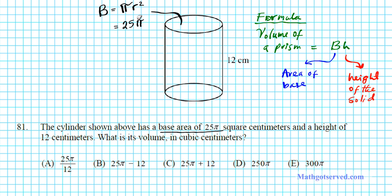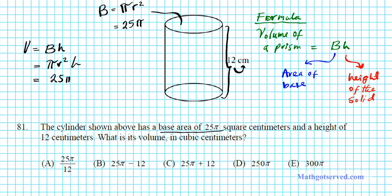So we know what big B is. The only thing we need to find is H. H is the height of the solid and we can clearly see that it's 12 centimeters. So the volume of the circular prism is big B times H, which is pi r squared times H. Pi r squared we already know is 25 pi, so 25 pi multiplied by the perpendicular height of 12 gives us 300 pi cubic centimeters. That's answer option letter E.